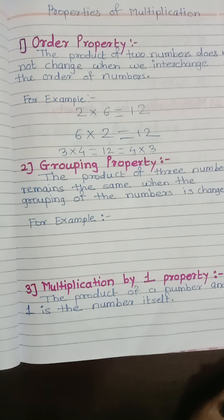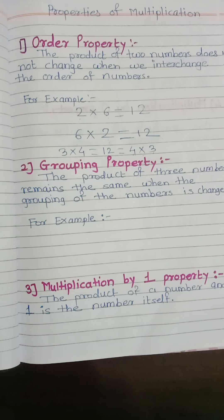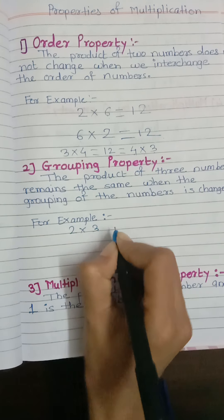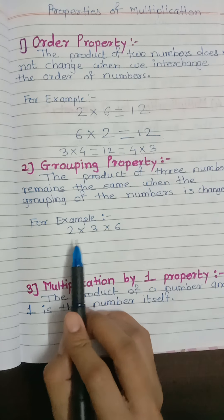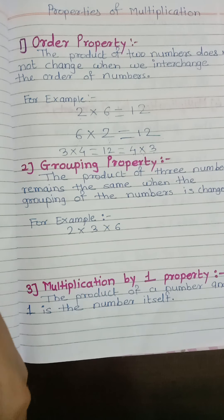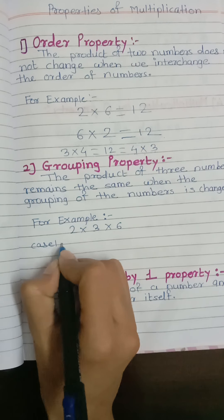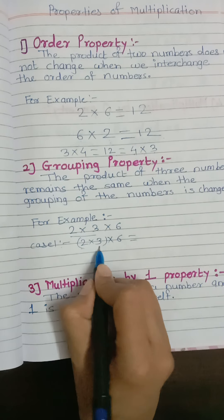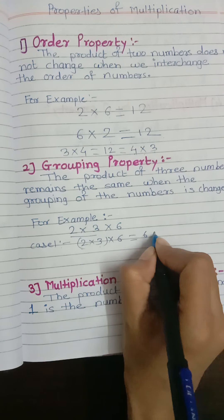The second property is the grouping property. The product of three numbers remains the same when the grouping of the numbers is changed. For example, consider 2 multiplied by 3 multiplied by 6. We have three numbers: 2, 3, and 6, and we will look at three cases of grouping.